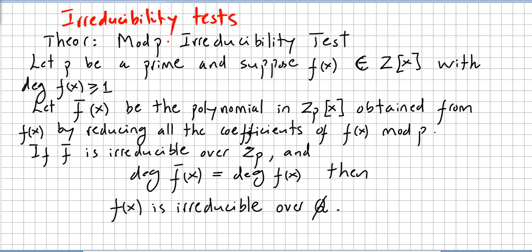Now we are going to move into some irreducibility tests. The previous theorem reduced the question of irreducibility of a polynomial of degree two or three to one of finding a zero. So if we have polynomials with degree two or three it's a matter of finding the zeros. This theorem is also very handy.